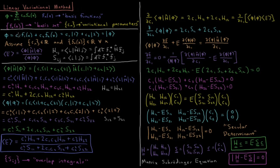Just like in the variational method, we're going to assume we have some trial wave function phi, and this trial wave function is going to be a linear combination of basis functions: the sum from n equals 1 to k of a coefficient c_n times a function f_n of x. Each of these individual functions is called a basis function; all of those basis functions together form a basis set, and in this case I'm going to have k basis functions in my basis set. The set of coefficients multiplying the functions are called our variational parameters.